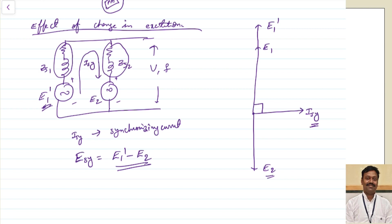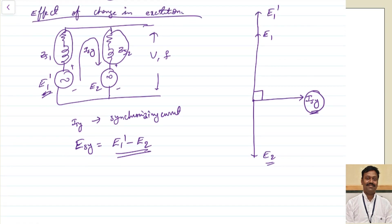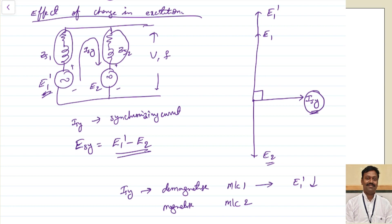The effect of Isy is: because it is lagging behind the first voltage, we have already seen that whenever the current is lagging the effect of armature reaction is demagnetizing. So Isy will demagnetize machine one and magnetize machine two. When machine one is demagnetized, E1 dash will decrease, and as machine two is magnetized, E2 will increase. As a result, your terminal voltage will increase and come to some equilibrium position.